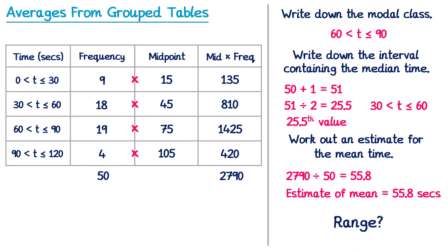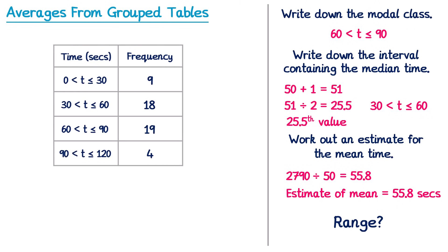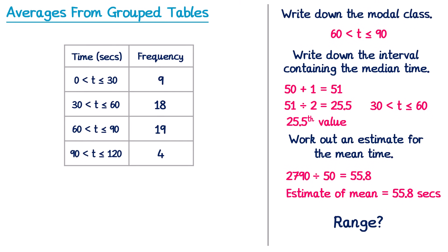Now you might be thinking why haven't we calculated the range? The range isn't an average, but in the previous video we did calculate the range for the regular tables. Let's take a closer look. We need to do the biggest value subtract the smallest value. But the range is impossible to do with any level of accuracy. How can we tell what the biggest value is?